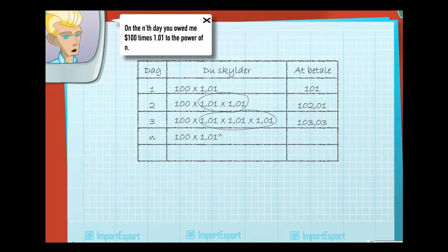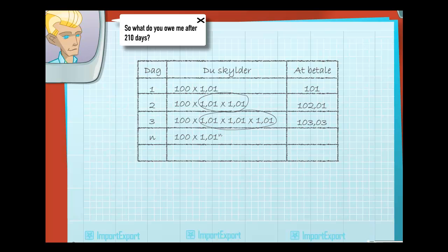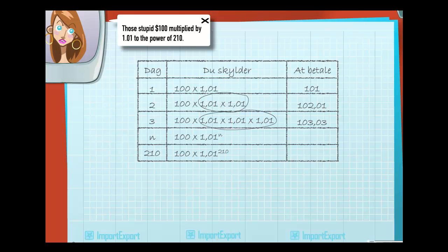On the nth day, you owed me 100 times 1.01 to the power of n. So, what do you owe me after 210 days? Those stupid $100 multiplied by 1.01 to the power of 210!